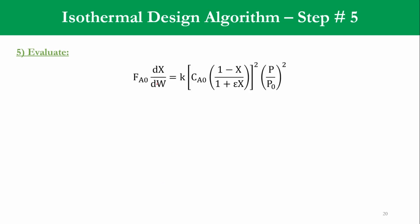Then evaluating, we write the same equation again: FA0·dX/dW = k·[CA0·(1-X)/(1+εX)]²·(P/P0)². Accordingly, we know that FA0 = v0·CA0, so that CA0, one part of CA0 is cancelled out. If you see, we place v0·CA0 over here, CA0 is cancelled out with this CA0, but it is still square, so accordingly it will come out, but it will become k·CA0/v0 in bracket: [(1-X)/(1+εX)]²·(P/P0)². And on the left side it is dX/dW.